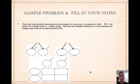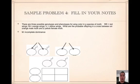Sample four. There are three possible genotypes and phenotypes for wing color in a species of moth: big R big R is red wings, big R little r is orange wings, little r little r is yellow wings. What are the probable offspring in a cross between an orange male moth and a yellow female moth? The mode of inheritance is incomplete dominance, because the heterozygous form is a blend of the dominant and recessive forms — there are three phenotypes and the middle one is a mix of red and yellow.